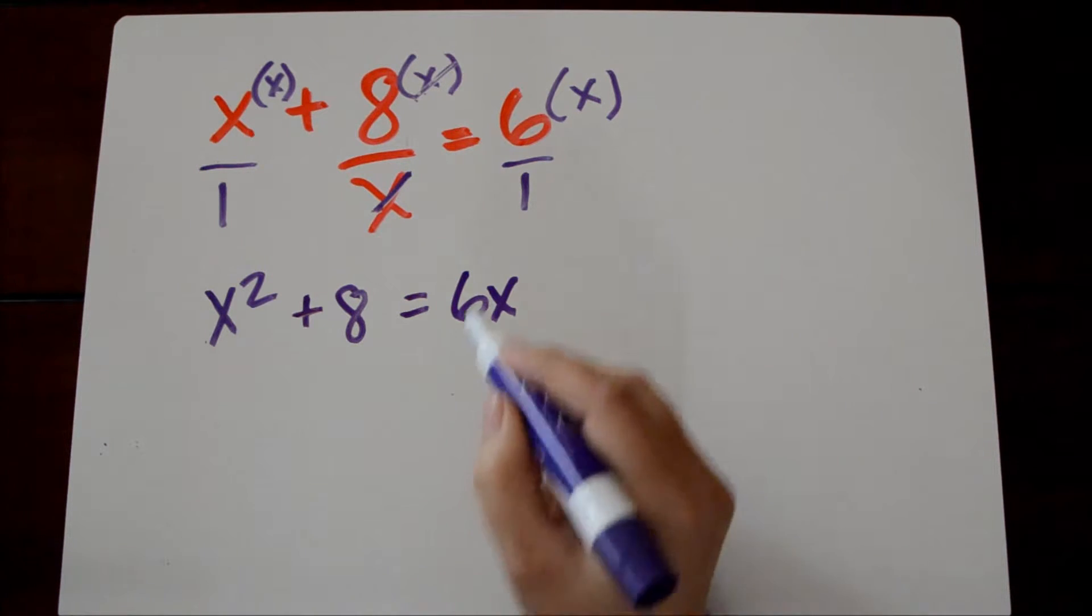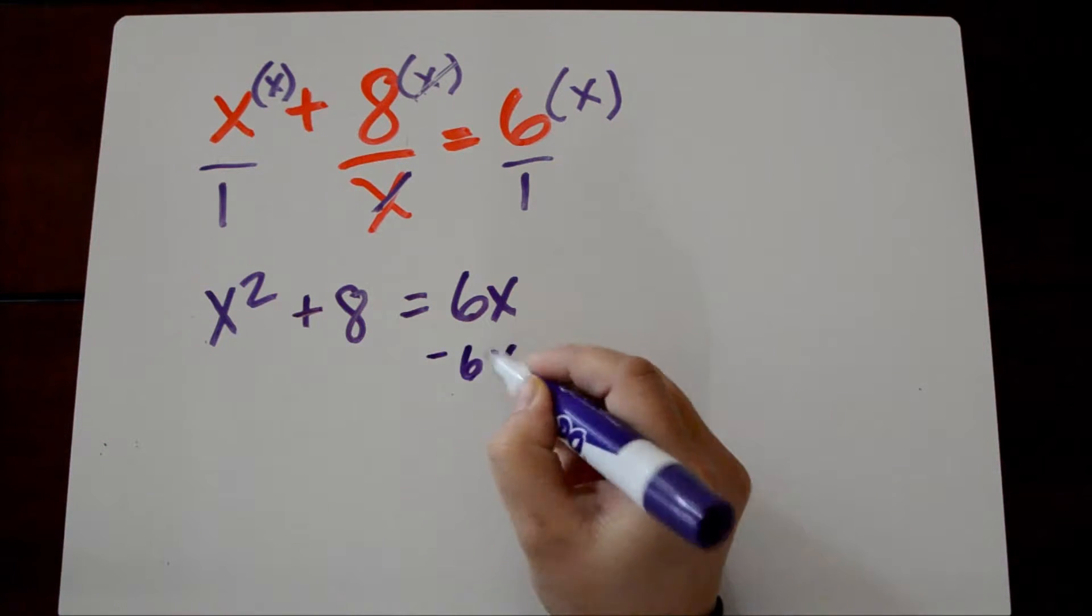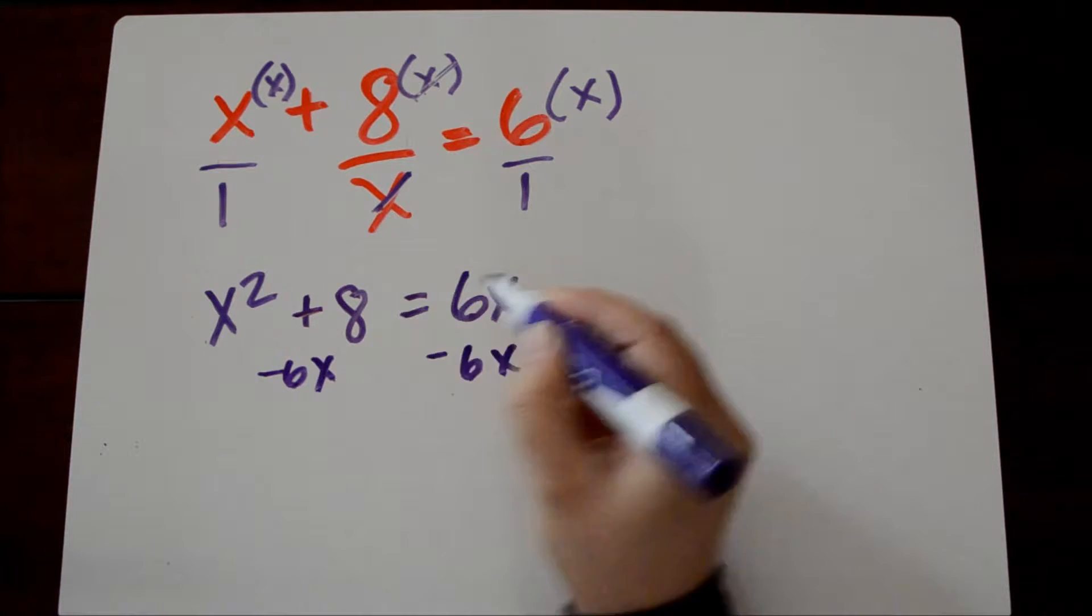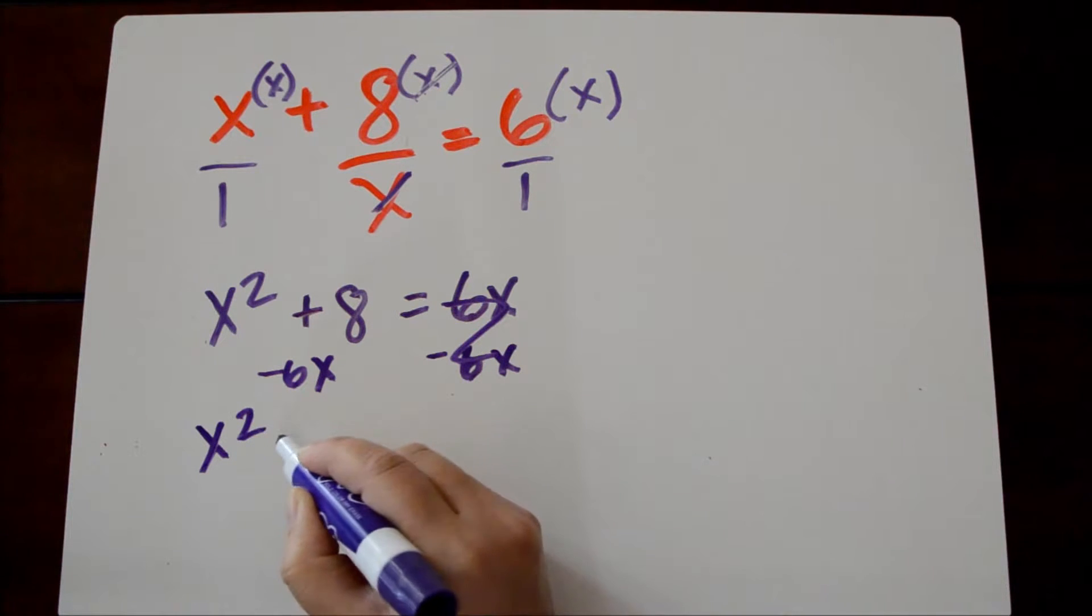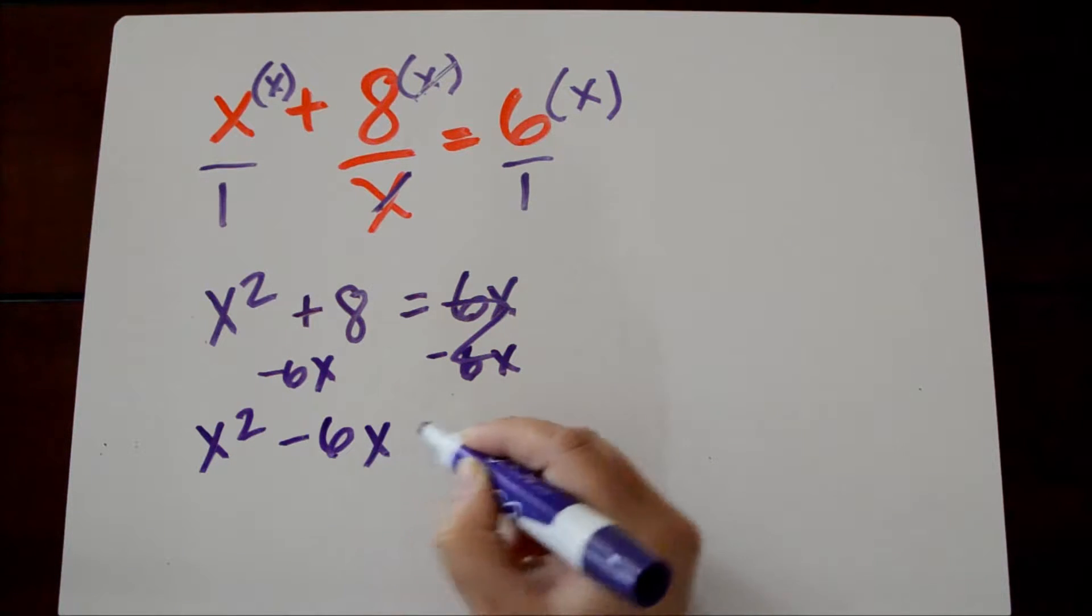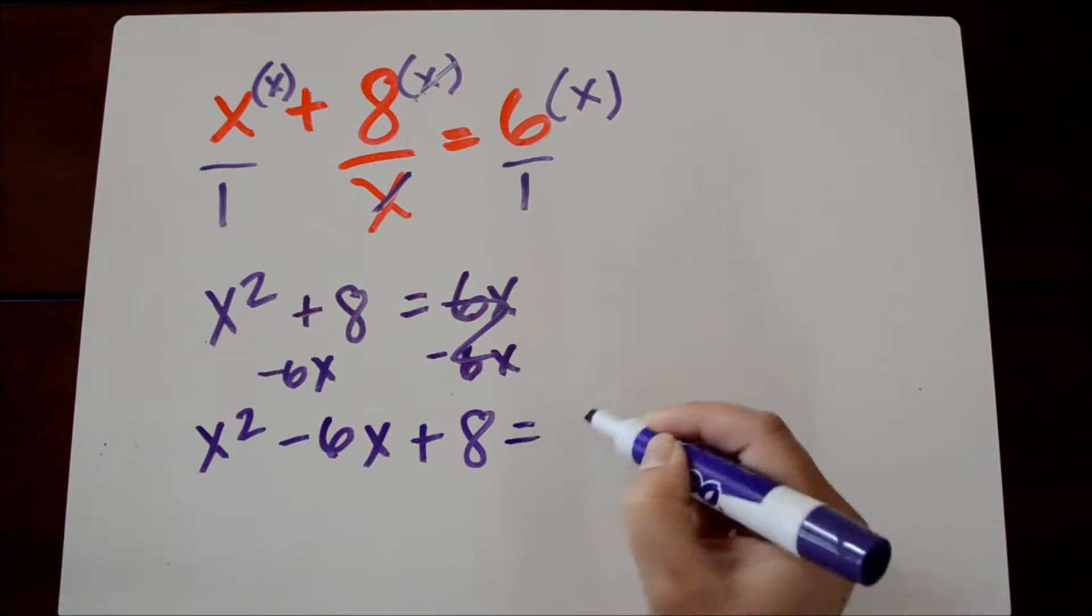And when we're solving quadratics, we want to set our equation equal to 0. So I'm going to subtract 6x from both sides. We get x squared minus 6x plus 8 is equal to 0.